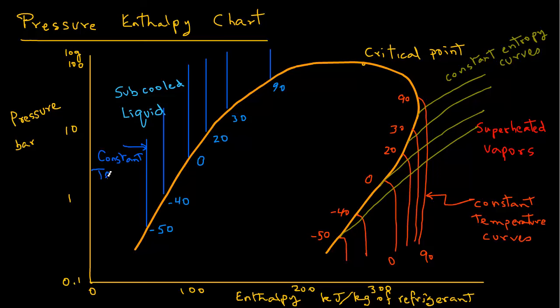As I said these lines will not be shown in the pH chart for a refrigerant but it is understood that vertical lines originating from those temperatures represent constant temperature lines in that region.